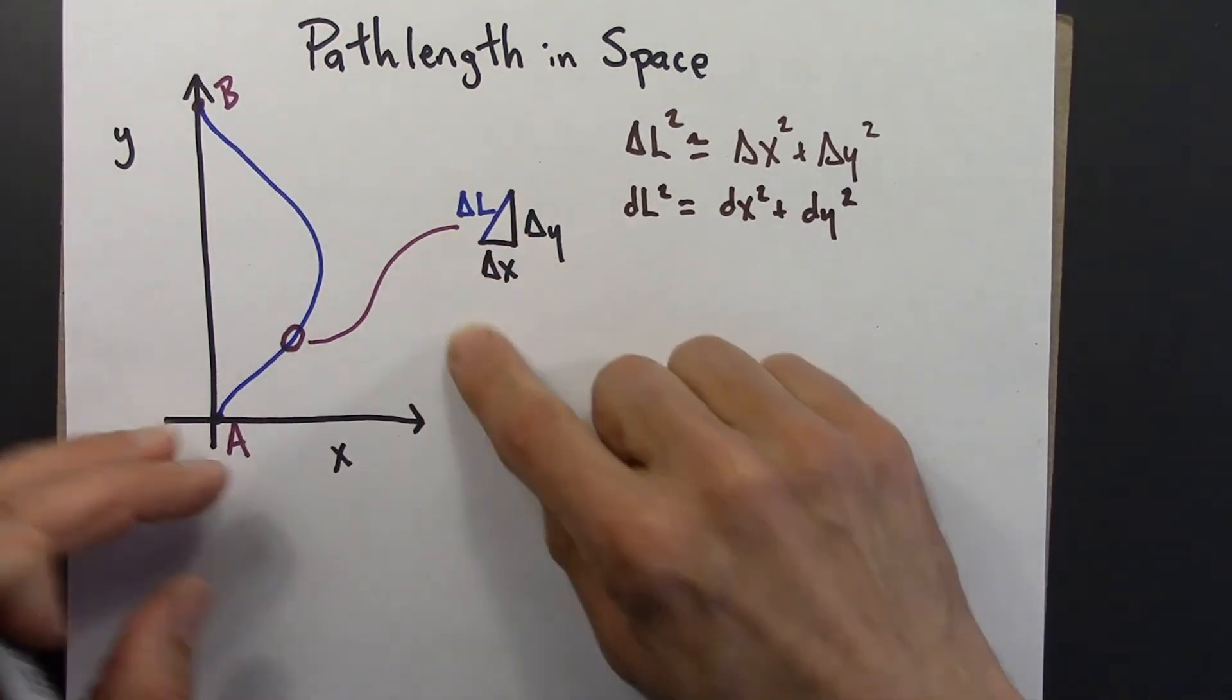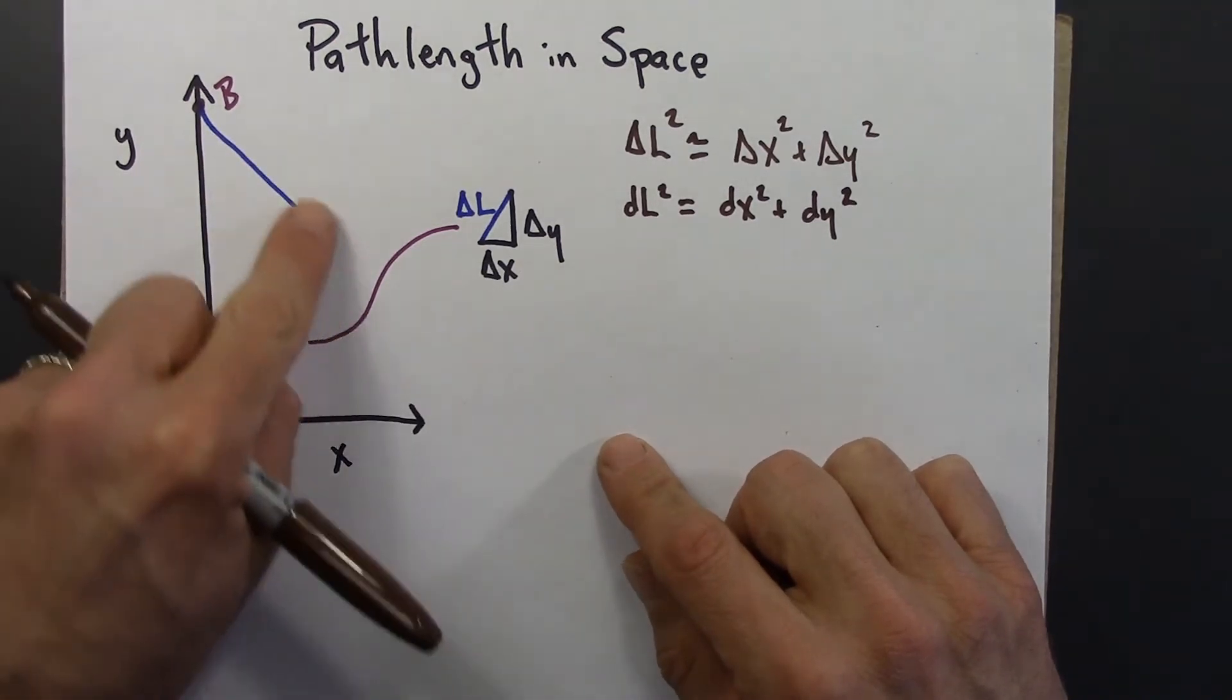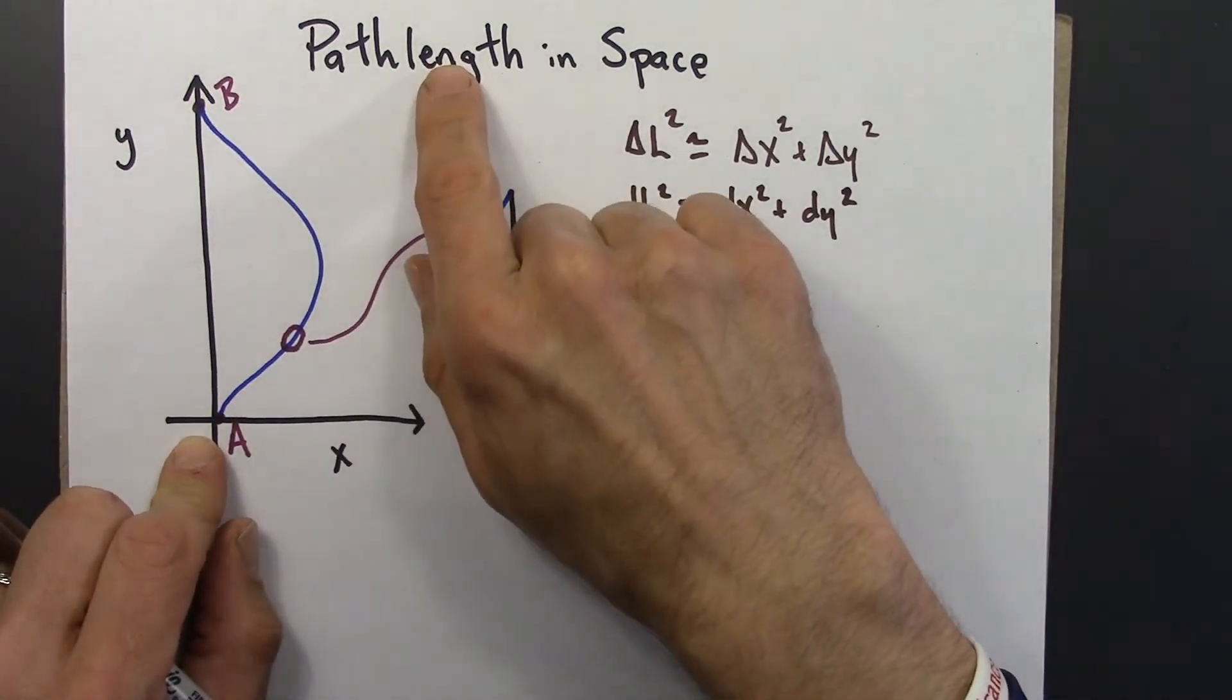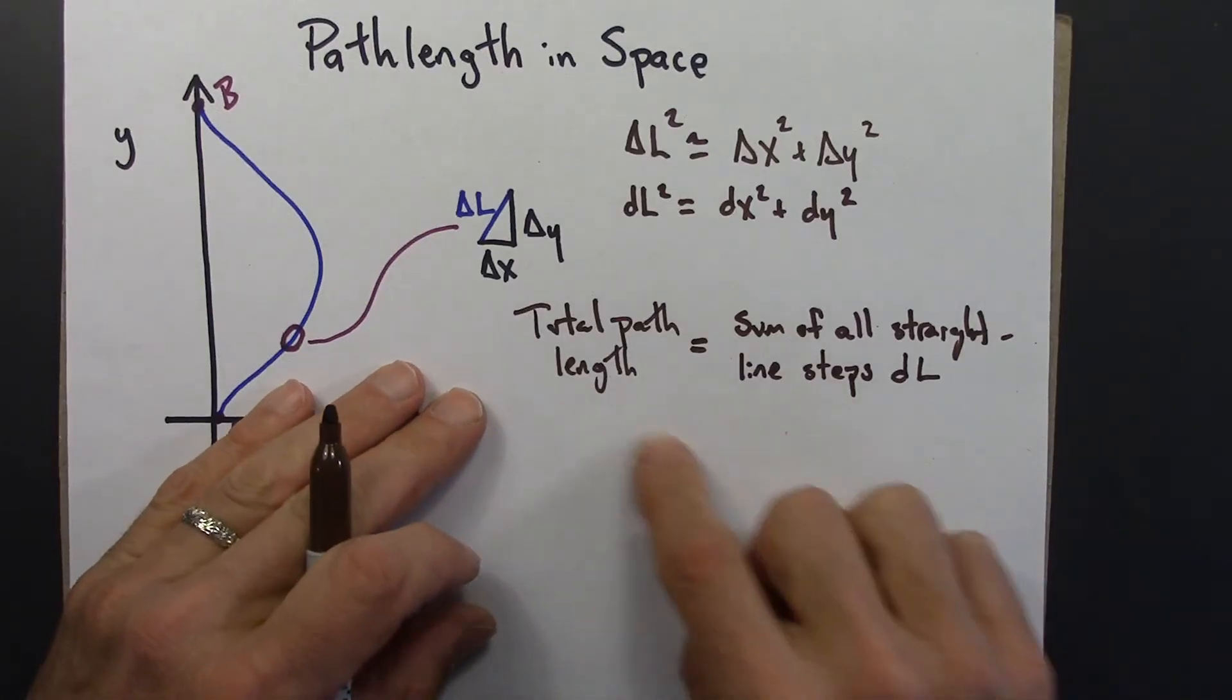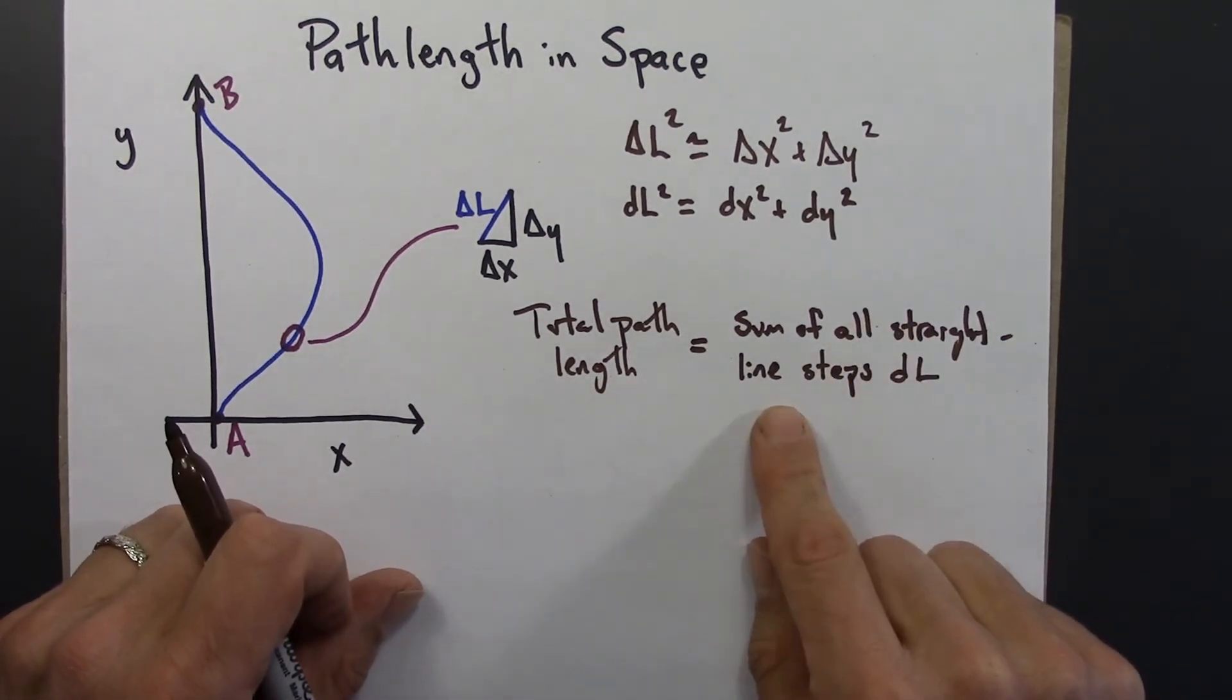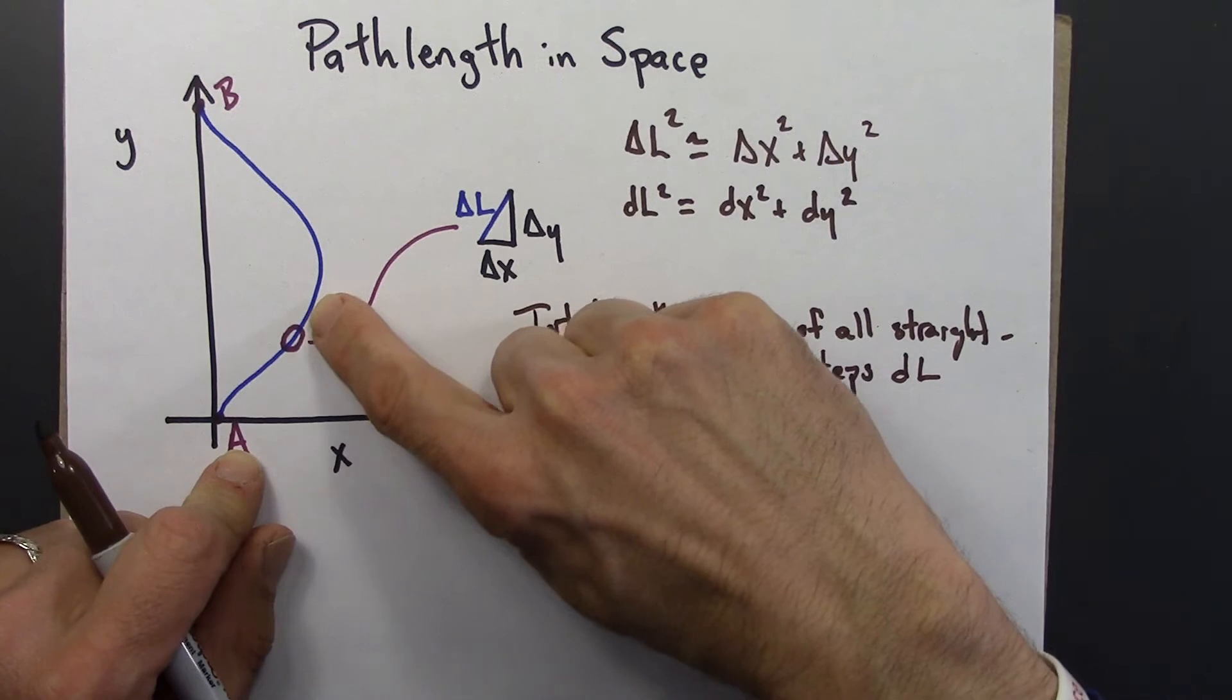Alright, so that tells us how to measure this little length. What about the entire curve? Well, this entire curve is actually made up of a whole bunch of little straight lines. That's how we're viewing this. And so the total path length, the length of this curve, we would get by adding up all of these little lengths. So the total path length, the total length of this blue line, we could get by adding up all of the lengths of the straight line steps. So we could do this Pythagoras business for this little piece, and then this little piece, and this little piece, and step along, along, along.